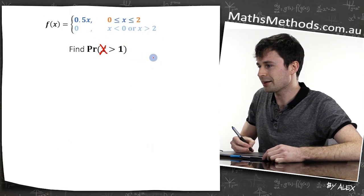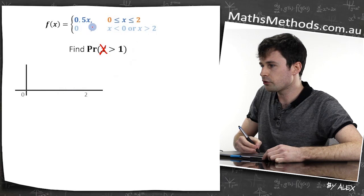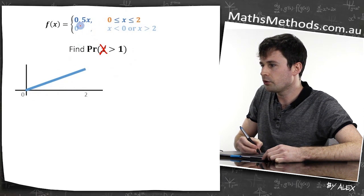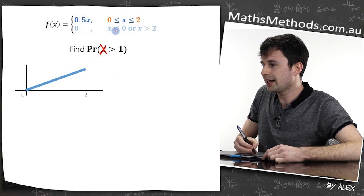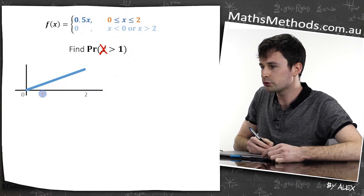And this will usually be a capital X. So in order to do that, first of all, we just need to draw out this graph. So let's draw in from zero to two is 0.5x, which is just a line. And it's zero when x is smaller than zero and when x is larger than two. So I'll draw those in as well.